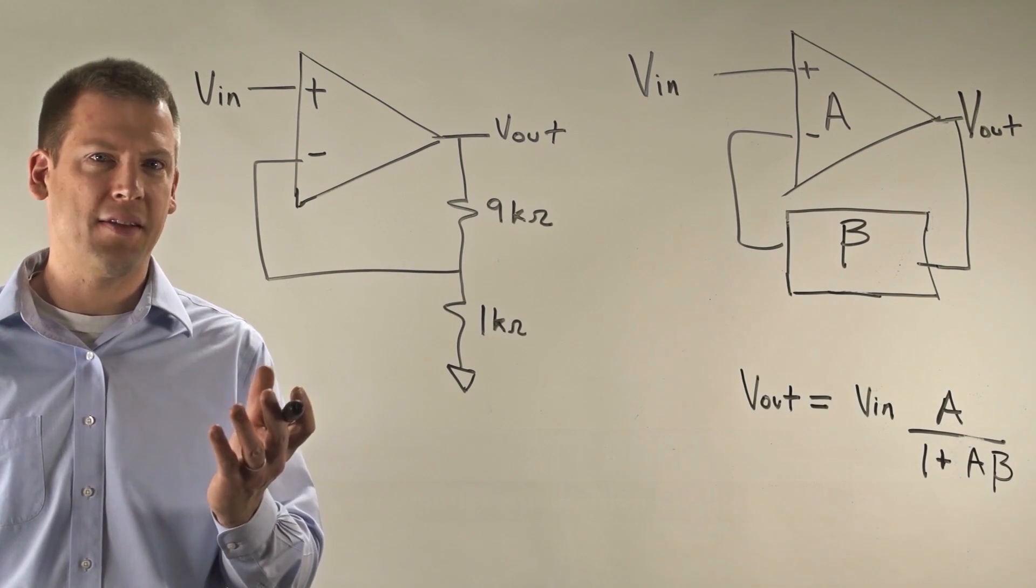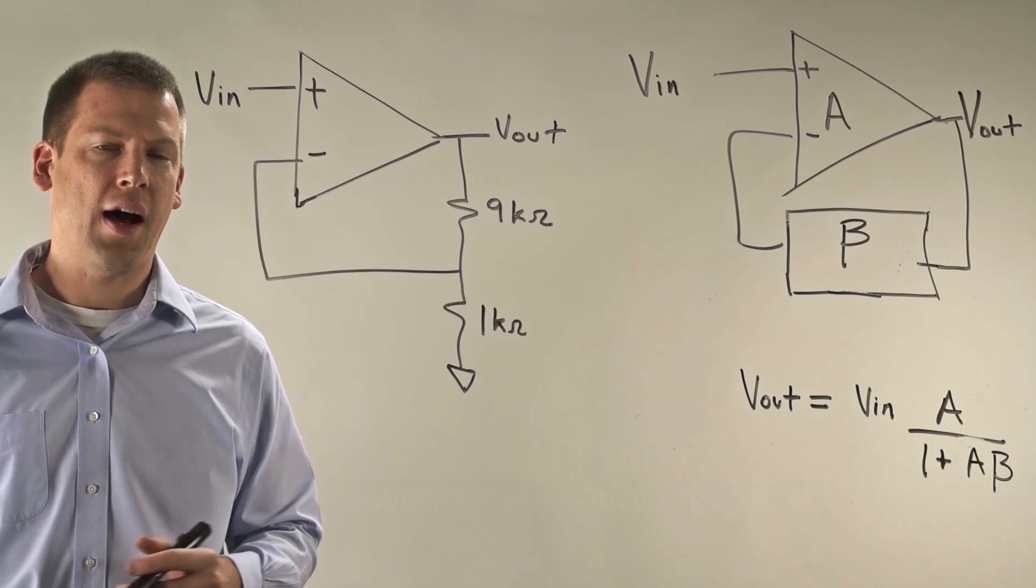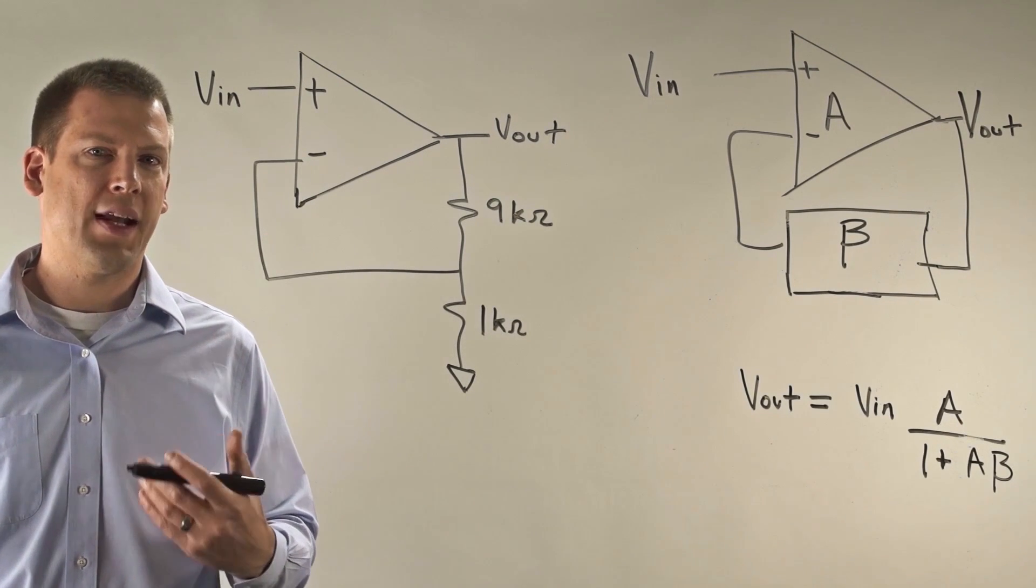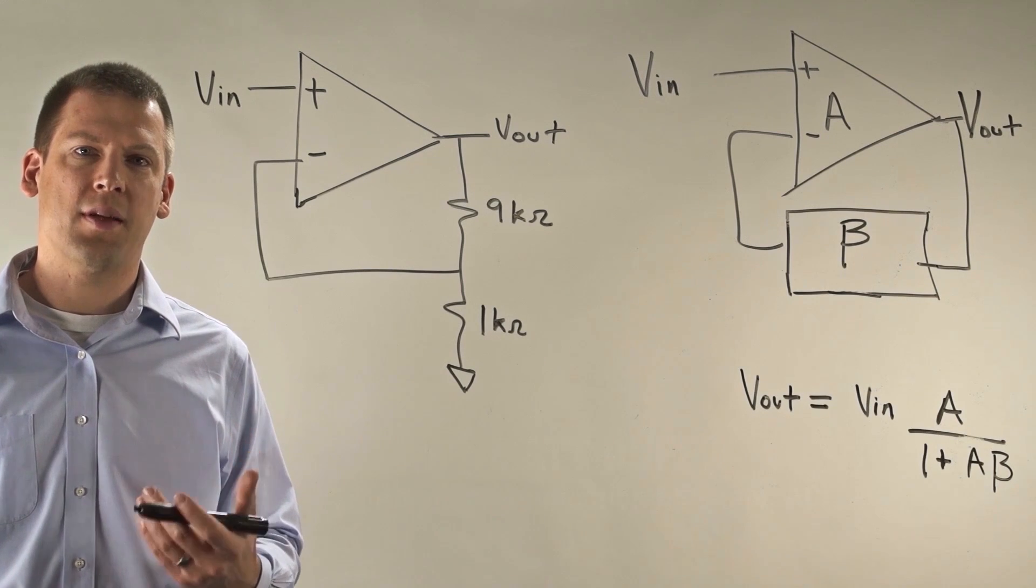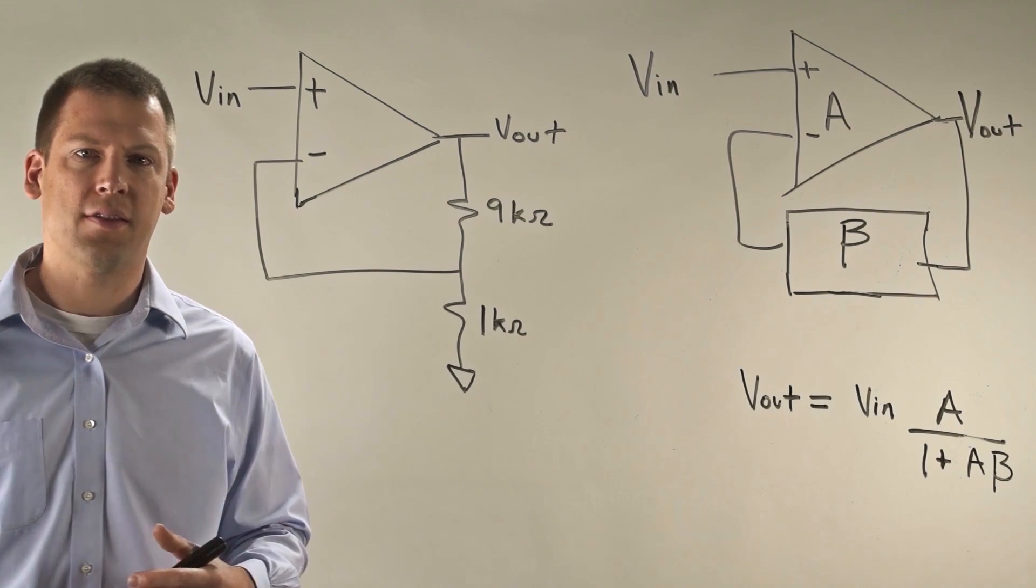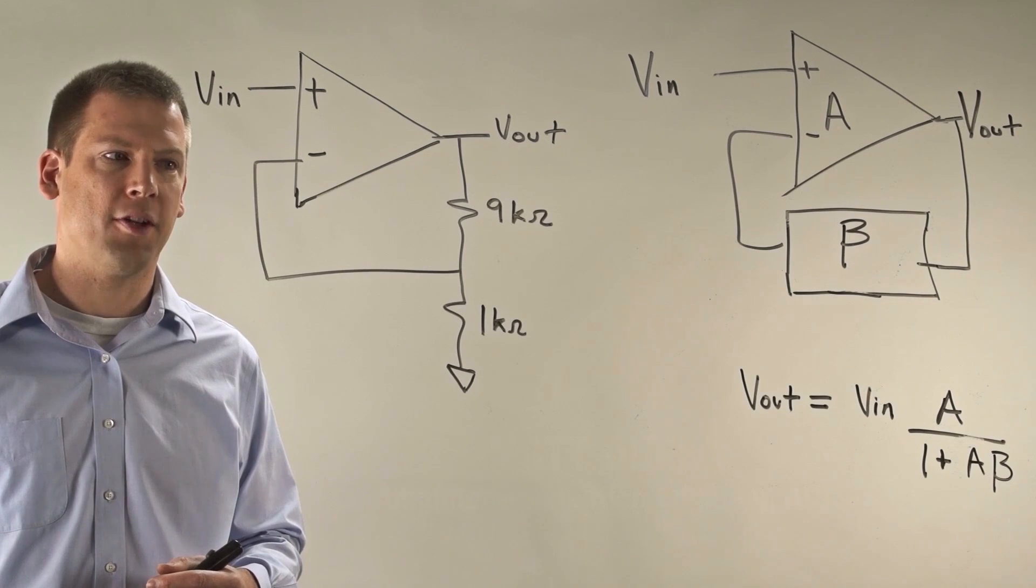For example, how you would analyze the stability of a typical op amp circuit. Before we can actually get into the details of looking at a few op amps, we're going to talk about this concept called loop gain, and this is very important in terms of analyzing stability.